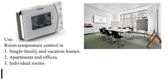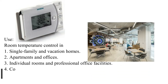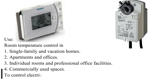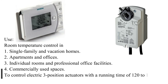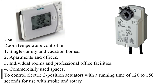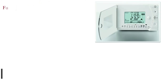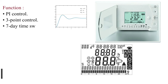7) Heating zone control. Use: room temperature control in single-family and vacation homes, apartments and offices, individual rooms, and professional office facilities for commercially used spaces — to control electric 3-position actuators with running time of 120 to 150 seconds for use with stroke and rotary actuators.